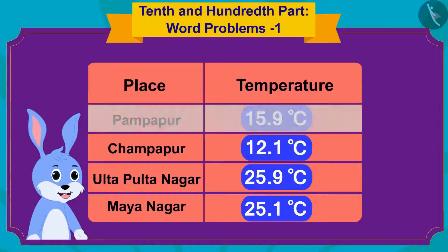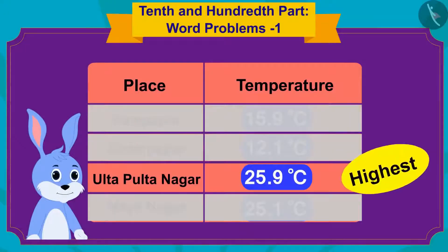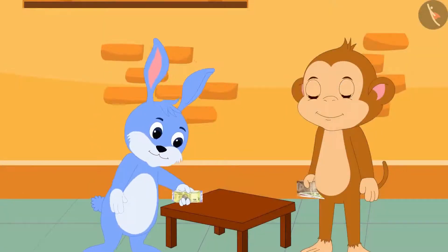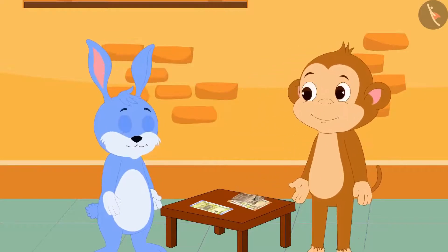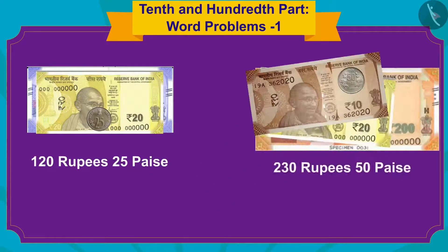Bunny also found the place with the highest temperature, just like us. Bunny and Babban collected some money together. Bunny is thinking: I have my 120 rupees 25 paise and Babban's 230 rupees 50 paise.